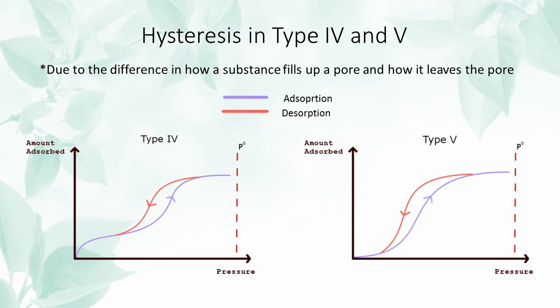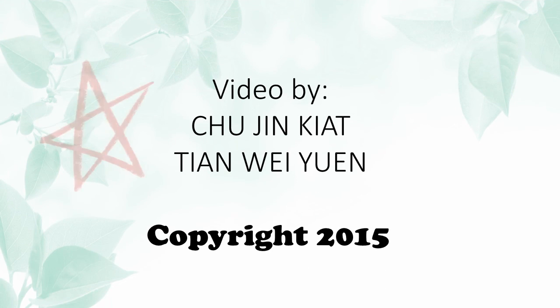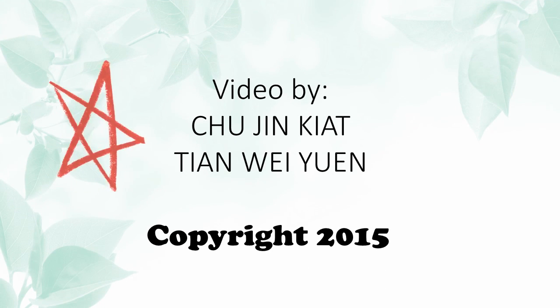One last thing to note is that the desorption curve for a type 4 and type 5 isotherm shows hysteresis, due to the difference in how the substance fills up a pore and how it leaves the pore. That's all for the video, and thanks for watching.